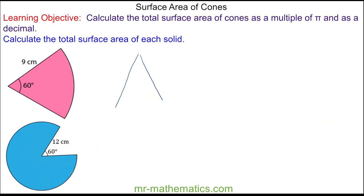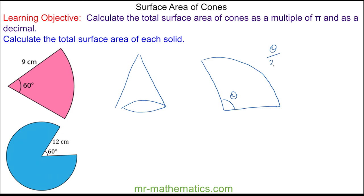If you imagine a cone which has been unravelled to make a net, the curved surface area will form a sector, and the area of that sector equals the curved surface area. From our lesson on sectors, the angle theta divided by 360 gives the fraction of the entire circle, which has area pi r squared. So the area of this sector is 60 divided by 360, multiplied by pi times 9 squared.